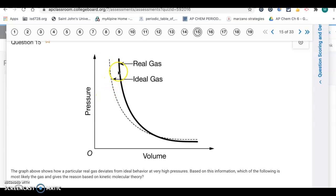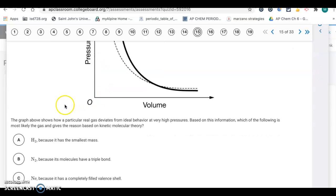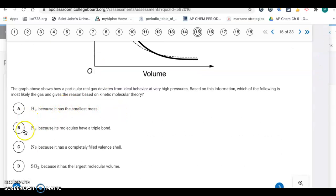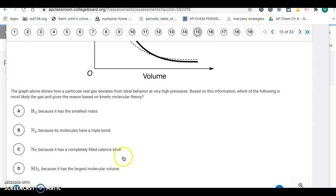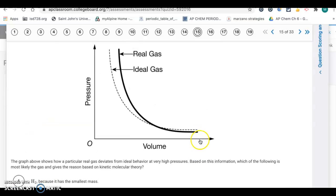Larger particles make it even more significant. You can see at high pressure on this graph here there's a significant difference between the real gas and the ideal gas. We want to be looking for the largest gas out of these choices. Letter D, SO2 because it has the largest molecular volume. It's the biggest particle of the four choices.